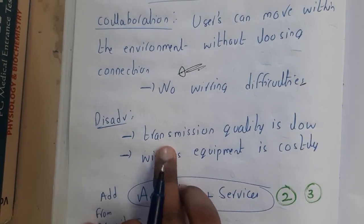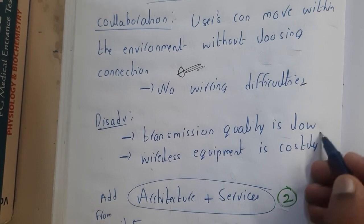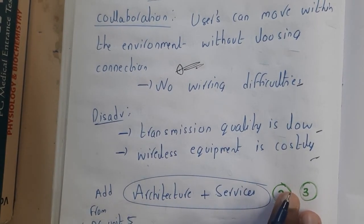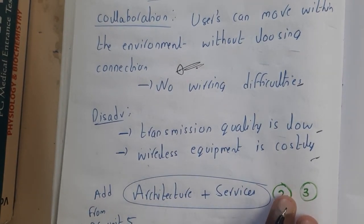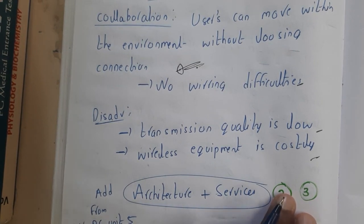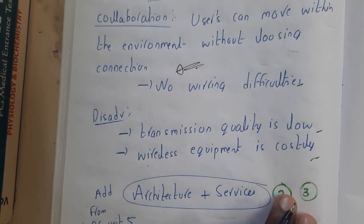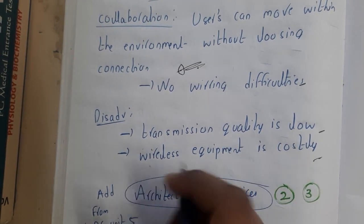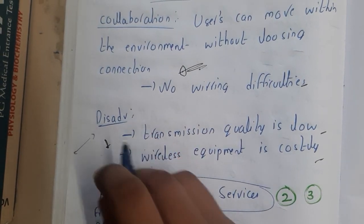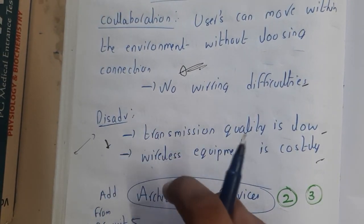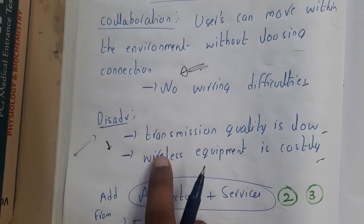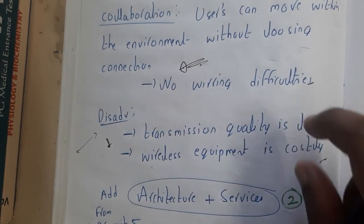The disadvantages are that transmission quality is low and wireless equipment is costly compared to wired setups, at least at small scale. However, at large scale — for example, connecting 100 devices — Wi-Fi becomes the best option and wired connections become more expensive. So it depends completely on your requirement.